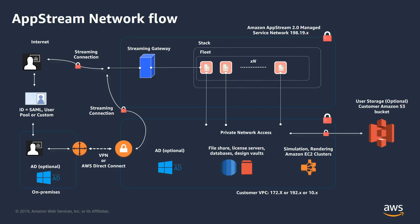Looking at the architecture diagram, AppStream is a fleet of instances running your application. Users access it through a streaming gateway via the browser. On the back end, it can use the AppStream user pool, or as in this demo, integrate with Active Directory. Now let's flip to the AWS console to see how this looks.